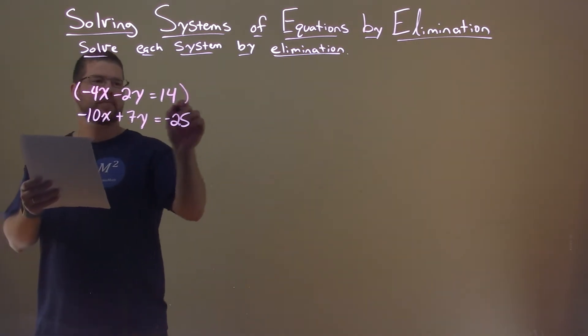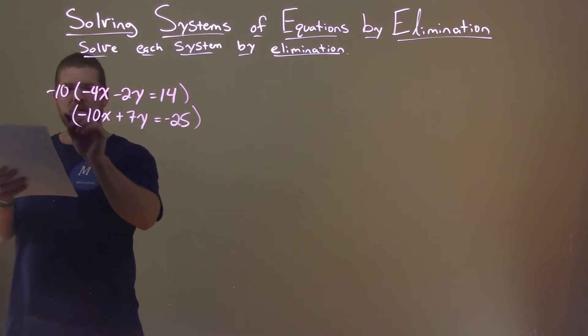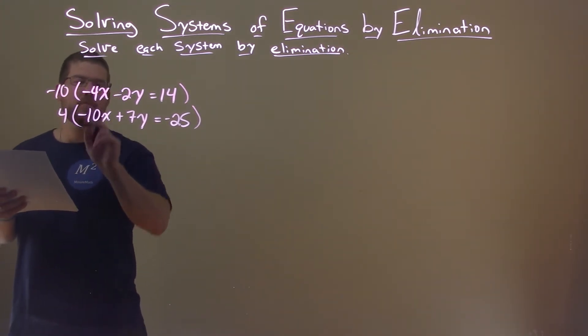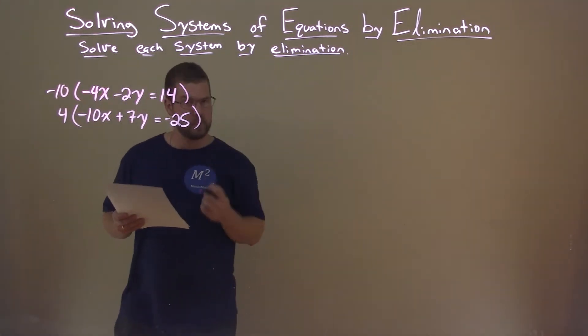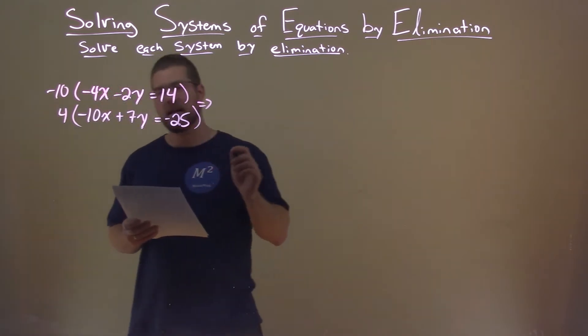If I take the top equation and multiply it by a negative 10, and the bottom equation by a positive 4, the bottom becomes a negative 40x, the top becomes a positive 40x, and we will eliminate those x's. So let's do that, top equation by negative 10.